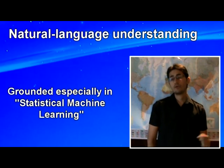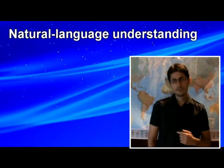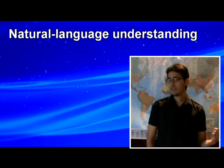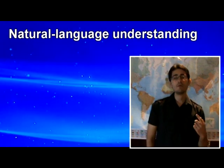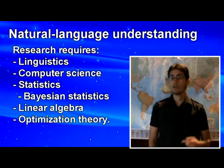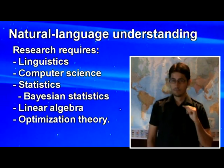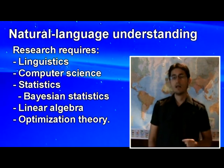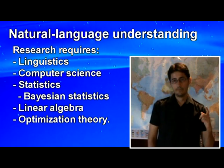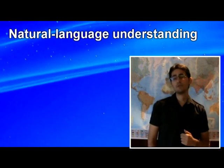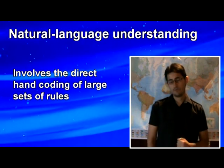Modern NLP algorithms are grounded especially in statistical machine learning. Researching to model statistical algorithms requires an understanding of a number of peripherals, including linguistics, computer science, statistics, linear algebra, and optimization theory. Prior implementations of language processing tasks typically involve the direct hand-coding of a large set of rules.